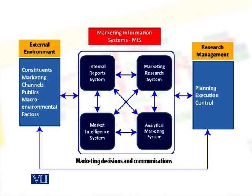Important arms of this major internal silo are what you see on the left-hand side and the right-hand side of this graphical illustration. On the left-hand side we have constituents, marketing channels, publics of different kinds, and macro environmental factors. On the right-hand side we have planning, execution, and control — because the outcome of the MIS is what we execute, meaning the execution of our programs. As you can see, this outcome goes back into the external environment and then over again into the internal one, making the whole thing an iterative process which goes on all the time.